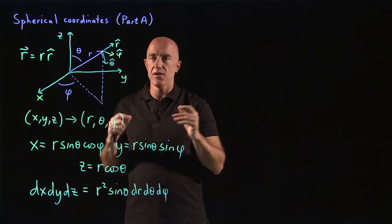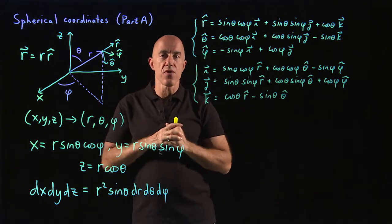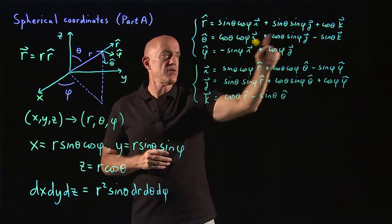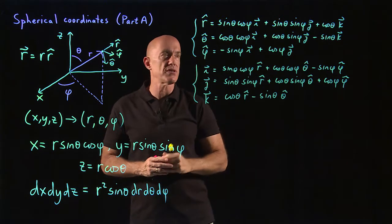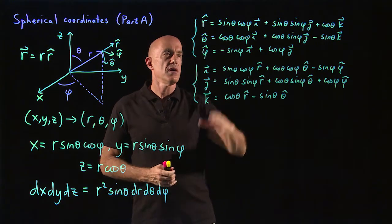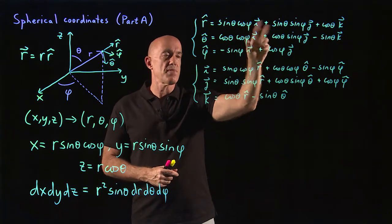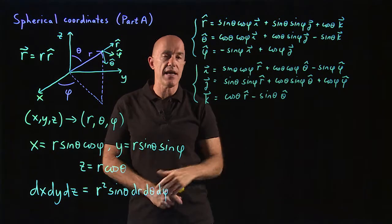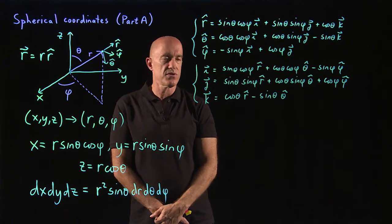Now let's look at the unit vectors. How do you write the unit vectors? The relationship between the unit vectors in spherical coordinates and the unit vectors in Cartesian coordinates involves these rather complicated expressions — 3×3 matrices. If you know some matrix algebra, you can represent this as a matrix product and then invert the matrix, and then you get i, j, k in terms of r-hat, theta-hat, and phi-hat.